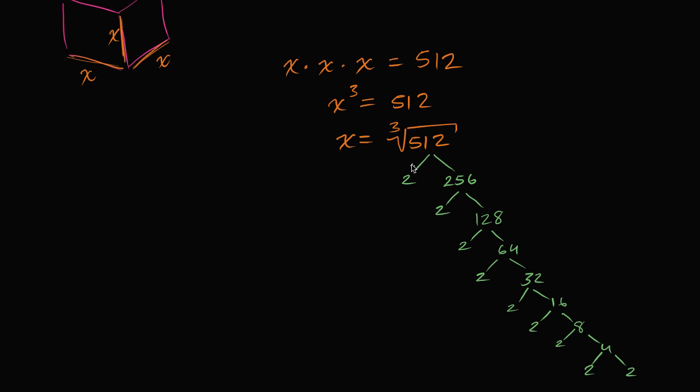But what we care about is what times itself, times itself is equal, what number, if I have three of them and I multiply them together, get us to 512. And to think about that, we could say, look, I have nine numbers here. So let me divide it into three groups. So if this is one group, and this is the next group, and this is the next group right over here,